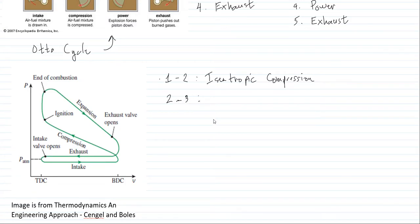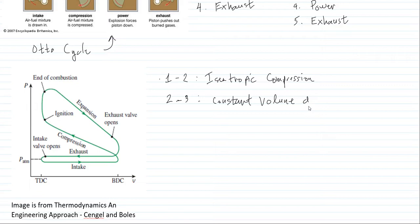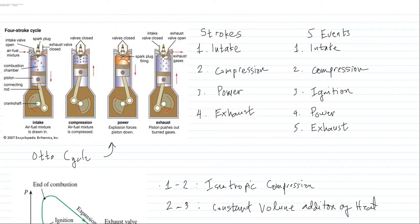Points 2 to 3 is the constant volume addition of heat. This means that the compression volume is held constant when the spark plug provides the spark so that the fuel and air mixture will burn.